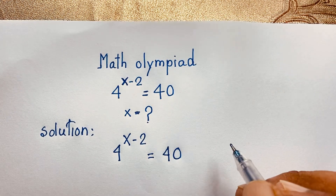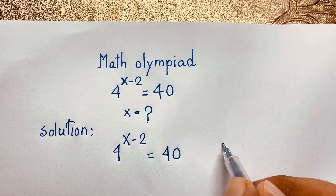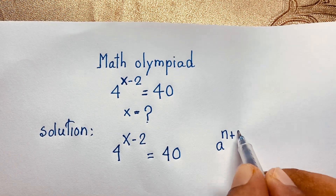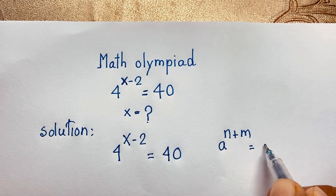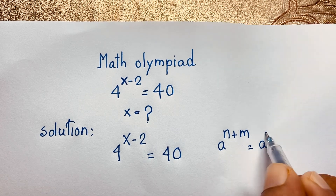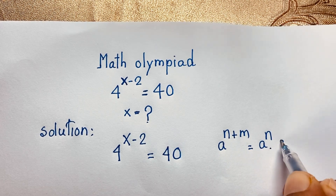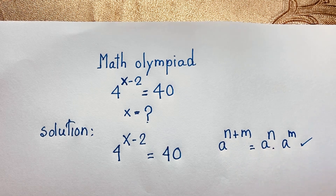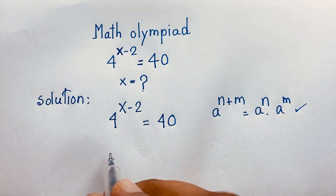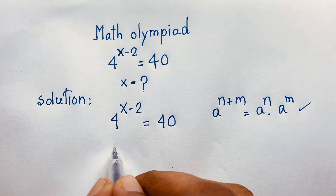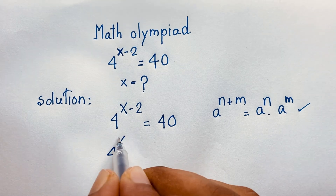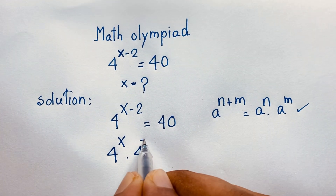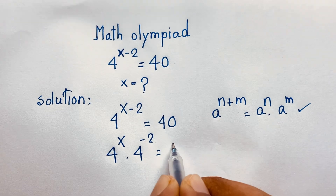According to the exponential formula, we know that a to the power n plus m equals a to the power n times a to the power m. If I apply this formula, you can see that in this expression it will be 4 to the power x times 4 to the power minus 2 is equal to 40.